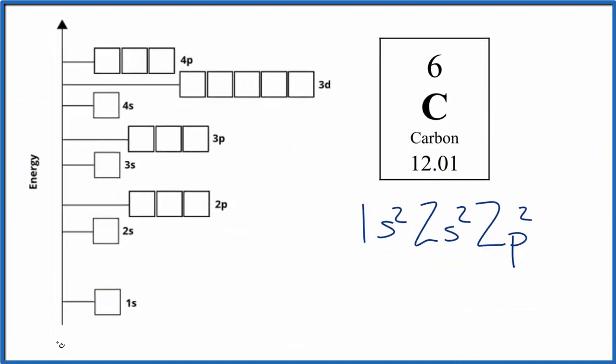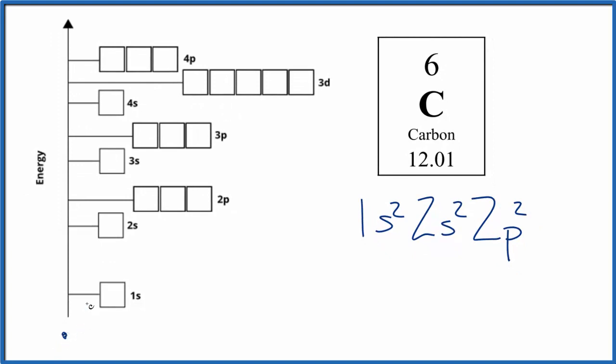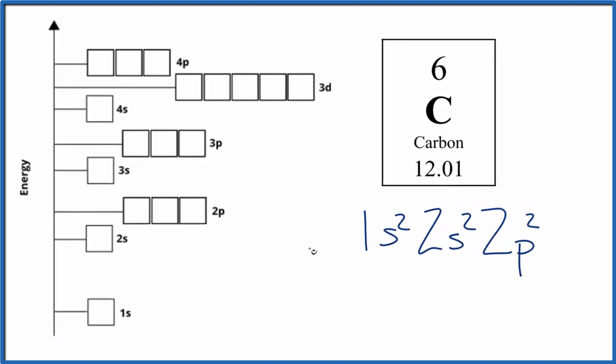You can kind of imagine the nucleus is right here of the carbon atom, and we're just adding energy levels, think of them as shells. So we start out with 1s2, put them in opposite directions. 2s2, so we have one, two there. And then 2p2, and we spread those out like this. And this is the orbital diagram for carbon.